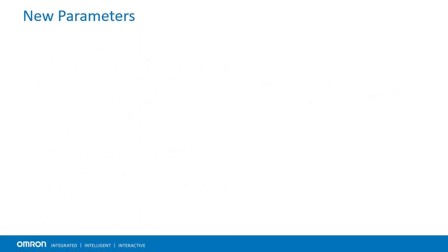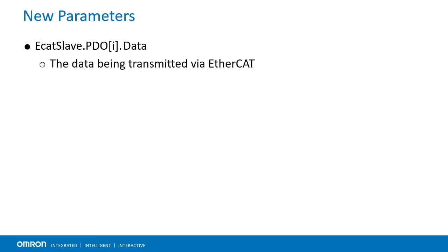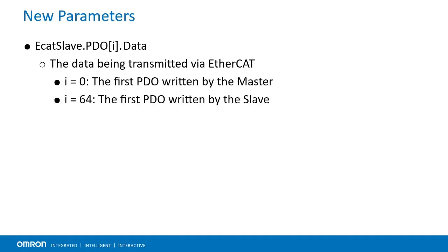Next, we will discuss parameters using the ECATSlave.PDOindex[i] prefix. Most importantly, ECATSlave.PDOindex[i].data contains the data being received and transmitted over EtherCAT between PMAC and the master device. Indices 0 through 63 contain data being written by the master to the slave, while indices 64 through 127 contain data being written by the slave to the master. Users will not be able to write to indices 0 through 63 while EtherCAT is enabled.